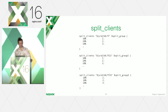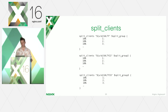When working with the split_clients module, you need to remember the following: to obtain reliable results, for every experiment with splitting you have to use a separate split_clients directive with a unique salt. In other words, each experiment has to be located within its own distribution. Don't worry — this does not consume many resources inside nginx.